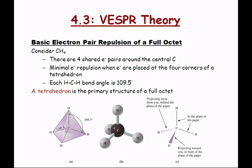In methane, there are four shared electron pairs around the central carbon — eight electrons total, four electron pairs. Minimal repulsion is when the electrons are placed at the four corners of the tetrahedron. When the atoms are in that orientation, they're as far away from each other as possible, giving 109.5 degrees. Remember the wedge, the hash bond, and the straight lines and what they mean.